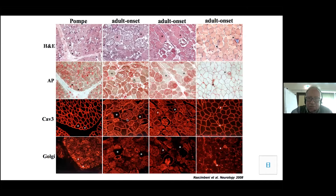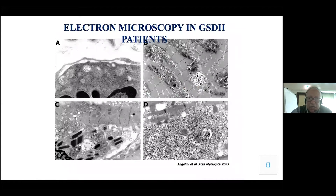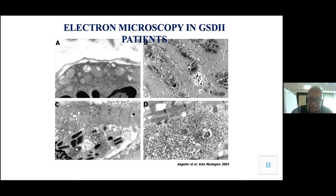This is due to proliferation of the lysosomal apparatus with formation of autophagosomes and other structures. This is important especially for the response to enzyme therapy, which I will discuss. You can appreciate the formation of lysosomes containing glycogen material. Sometimes these lysosomes become autophagosomes, and sometimes they rupture, leading to every kind of cellular alteration.